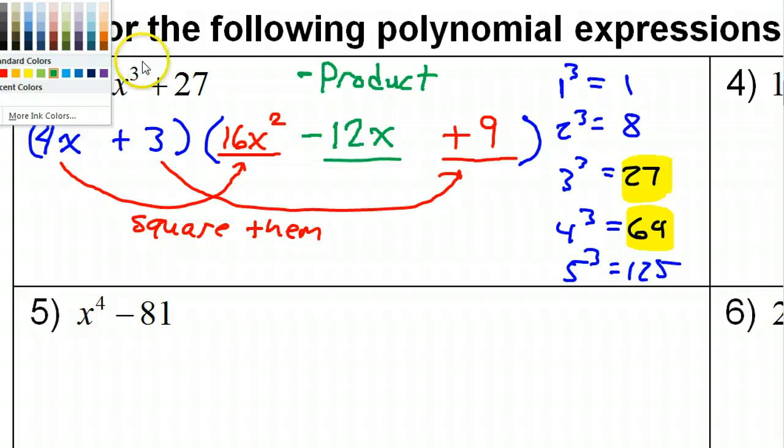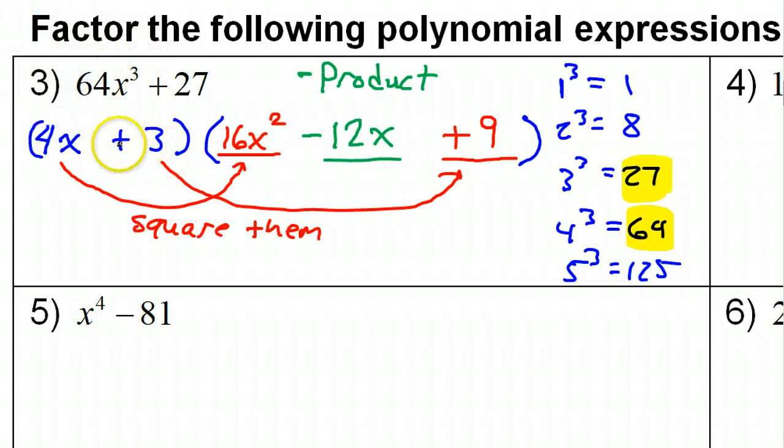Some students benefit from the following little acronym to help you remember the three signs that show up in these problems. We all need to use SOAP. S, O, and then A, P. And that stands for Same, Opposite, Always Positive. Because, compared with the original problem, this first sign is always the same. And this second sign is always opposite. And the third sign is always positive, no matter what. So, use SOAP if it makes you feel better. Alright, so that's how you factor the sum or difference of two cubes.